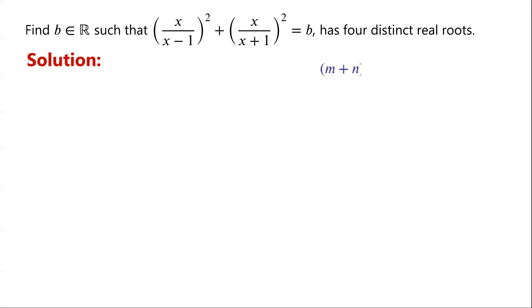We know that (m + n)² equals m² plus 2mn plus n². That is to say, if we add 2mn to m² plus n², then we can complete the square.